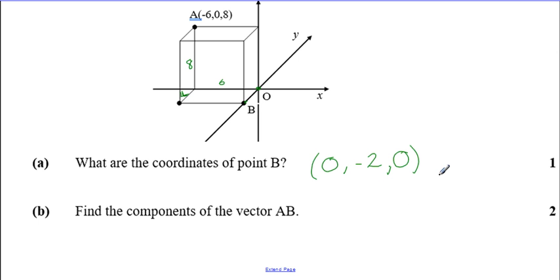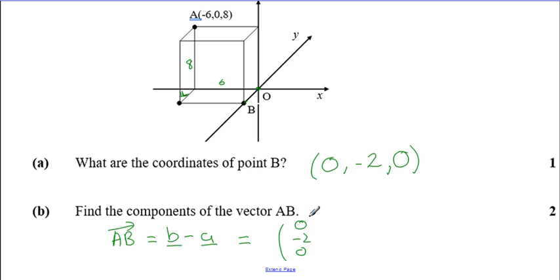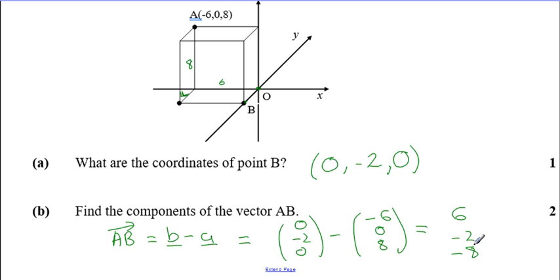Find the components of vector AB. To find a vector between two coordinates, it's the second position vector subtract the first — so B subtract A. Position vector B is (0, −2, 0), subtract A which is (−6, 0, 8). So: 0 − (−6) = 6, −2 − 0 = −2, and 0 − 8 = −8. Marks: one for getting the coordinate of B, one for knowing that AB = B − A, and one for calculating. That's 3 marks.